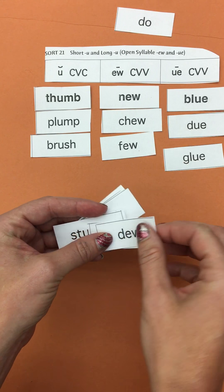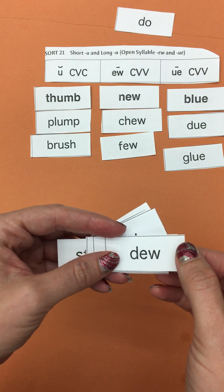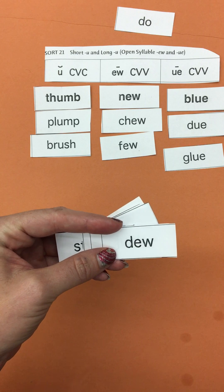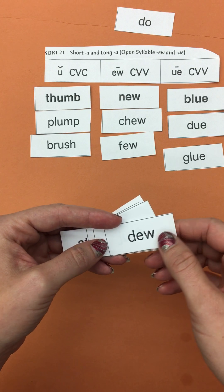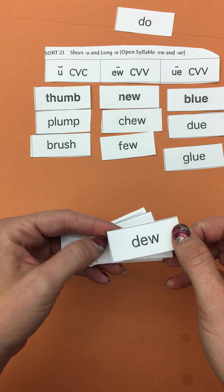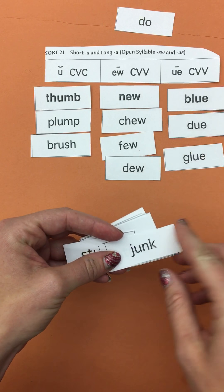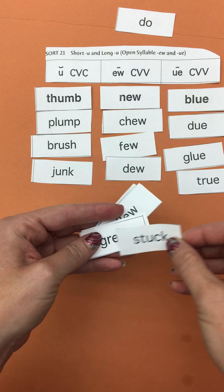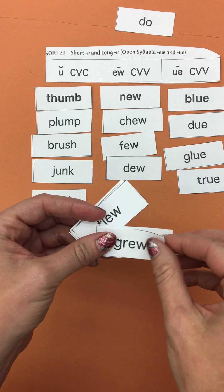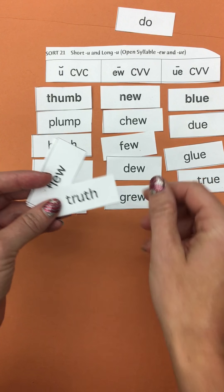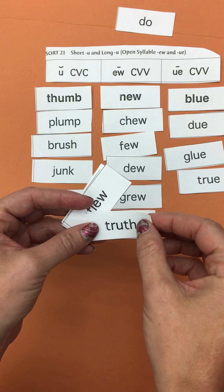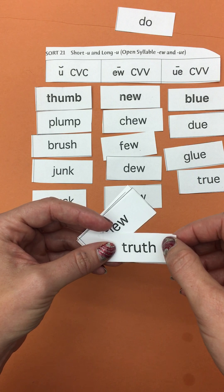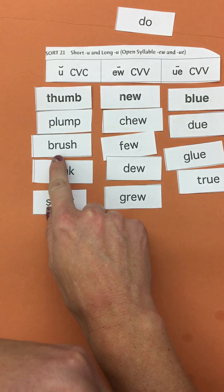Here's another one — 'dew,' like the water you find on your grass because it was cold. Now: junk, true, stuck, grew, truth. I hear 'ooh' in 'truth,' not 'uh.'